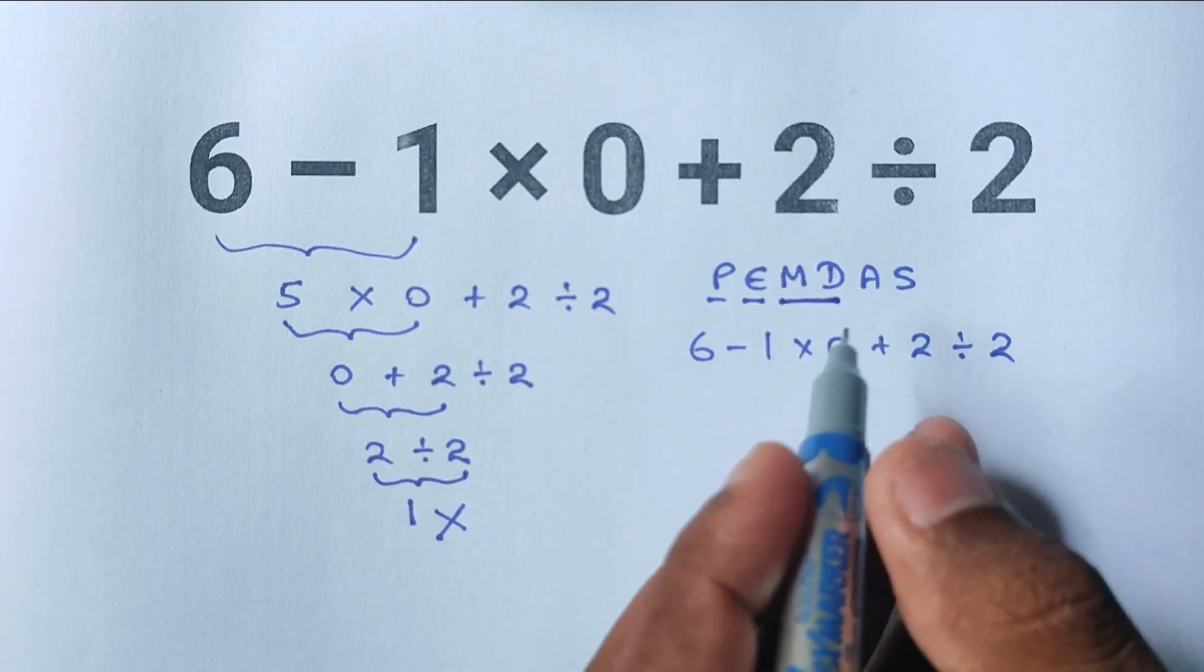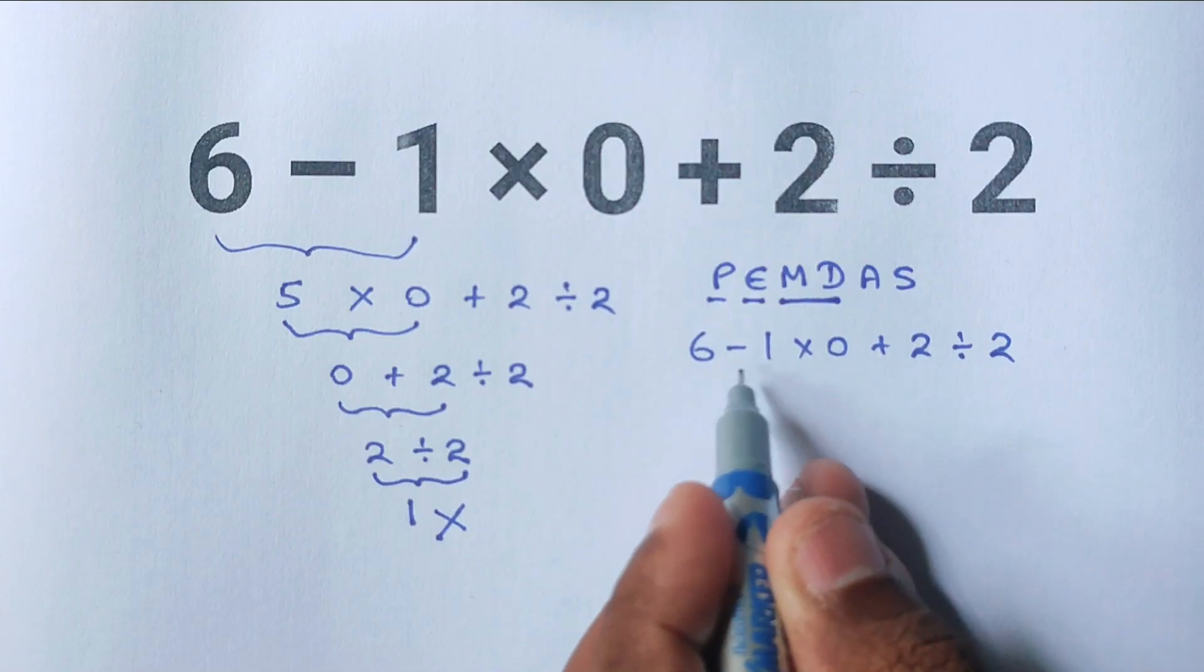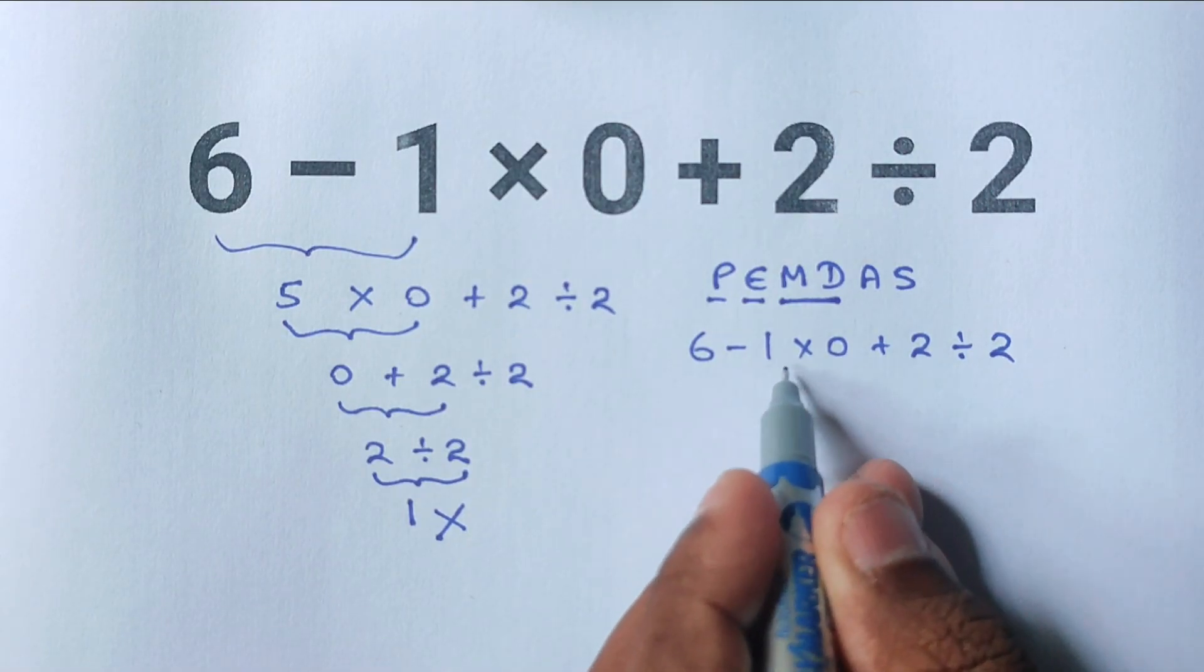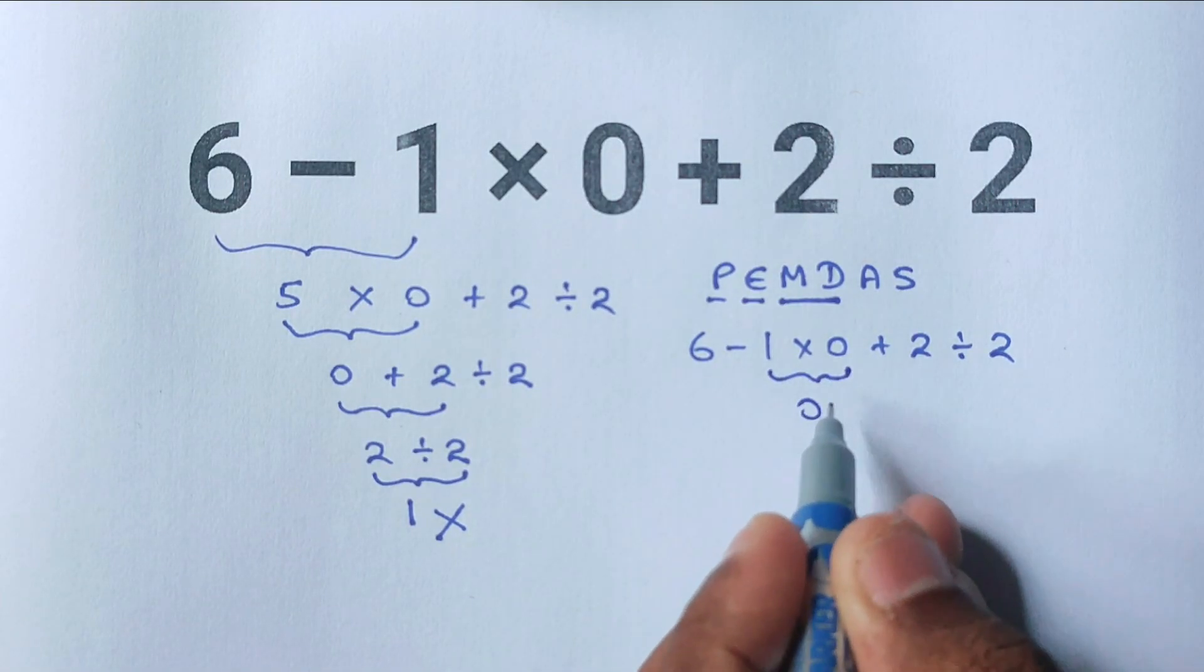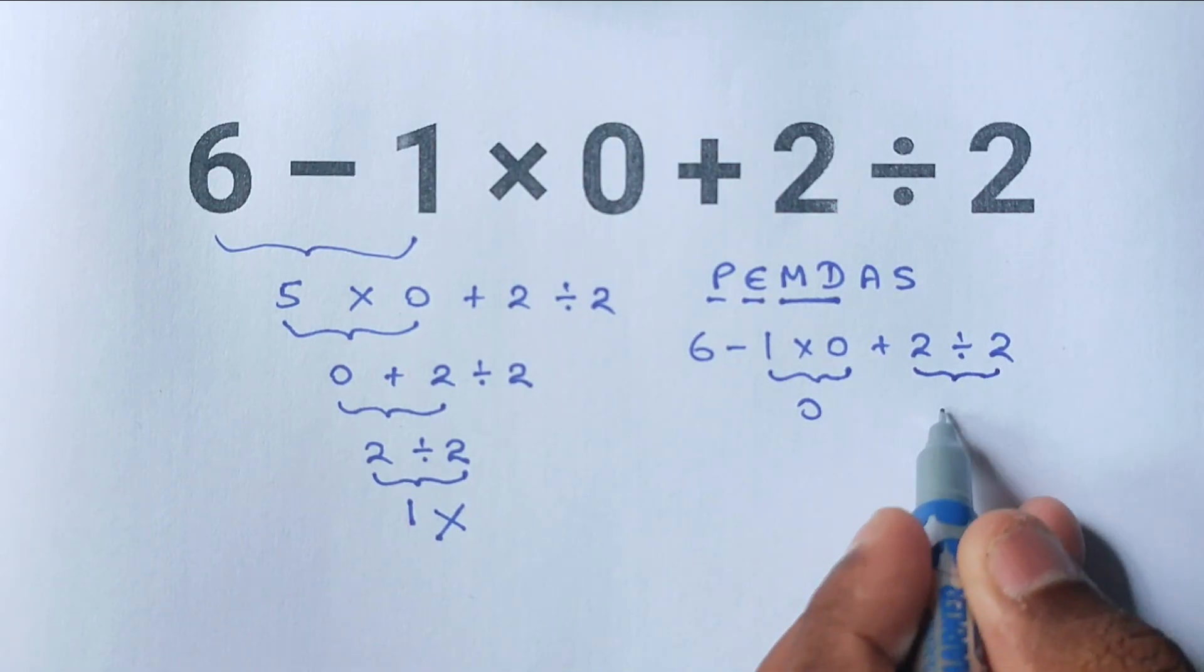They are at the same level, so we perform them in order from left to right. First, we do 1 times 0, and that gives 0. Next, we handle the division: 2 divided by 2, which equals 1.